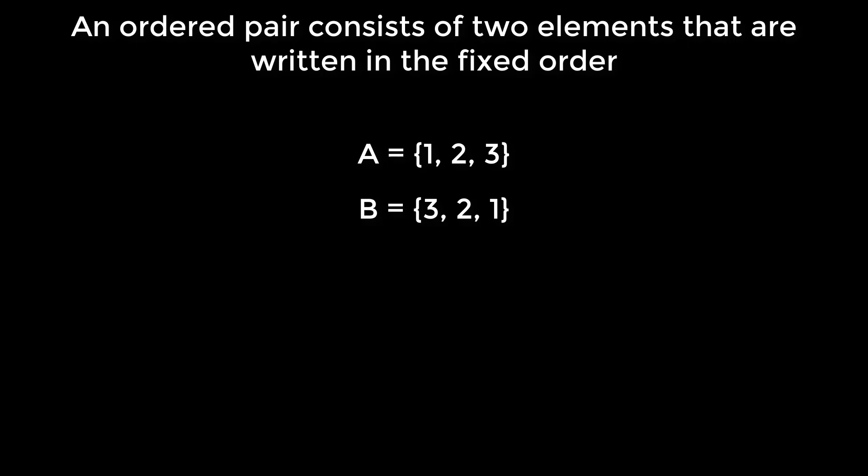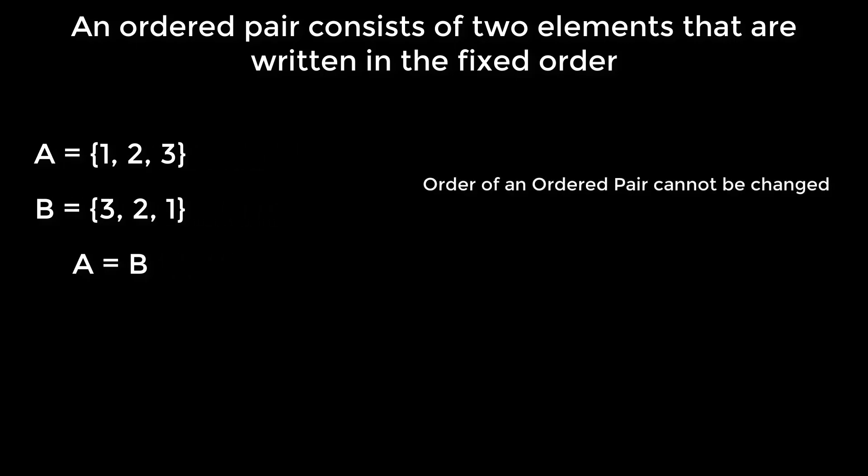We have already learned that in a set, the order has no impact, and thus A and B are the same set. However, things are different for ordered pairs. The order of an ordered pair cannot be changed.